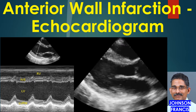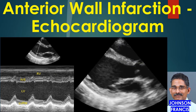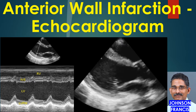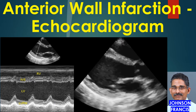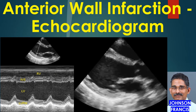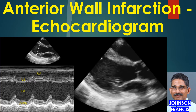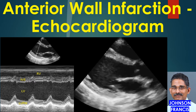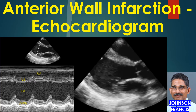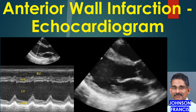Echocardiogram in anterior wall myocardial infarction. The left panel shows M-mode echocardiogram while the right panel shows two-dimensional echocardiogram in the parasternal long axis view, showing right and left ventricles, aorta, left atrium, and aortic and mitral valves.